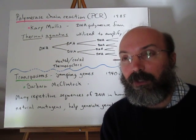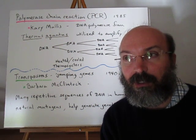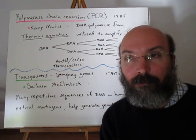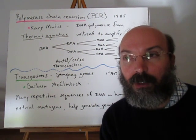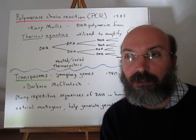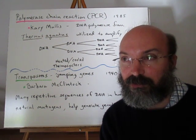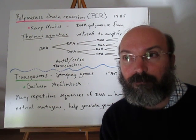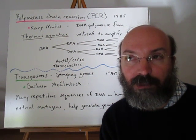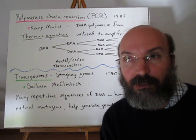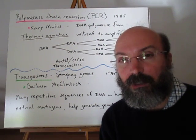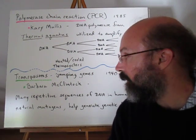PCR also has promise in bringing back prehistoric animals. For example, we could take cells from a woolly mammoth that might be very, very degraded, and use PCR to amplify the DNA in those organisms so that we could come up with enough DNA to make another woolly mammoth. Then we would have to go through the same cloning process described earlier, and use an African elephant or maybe an Indian elephant as a surrogate mother.